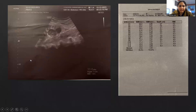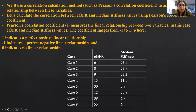Here is an example of the imaging and the shear wave elastography taken of the kidney in a chronic kidney disease patient. We use a correlation calculation method such as Pearson's correlation coefficient to assess the relationship between these values, specifically the correlation between eGFR and median stiffness values.